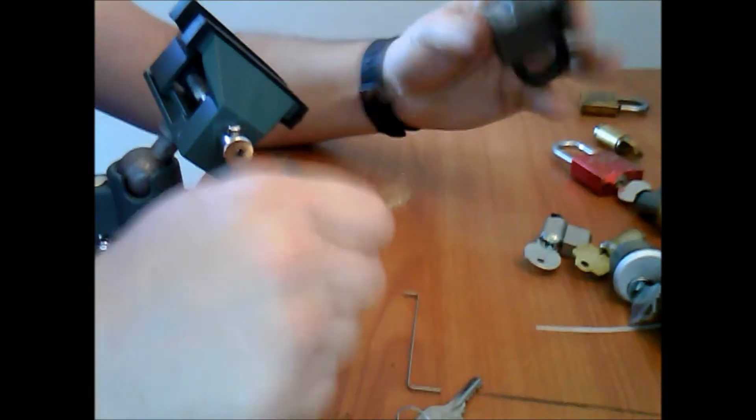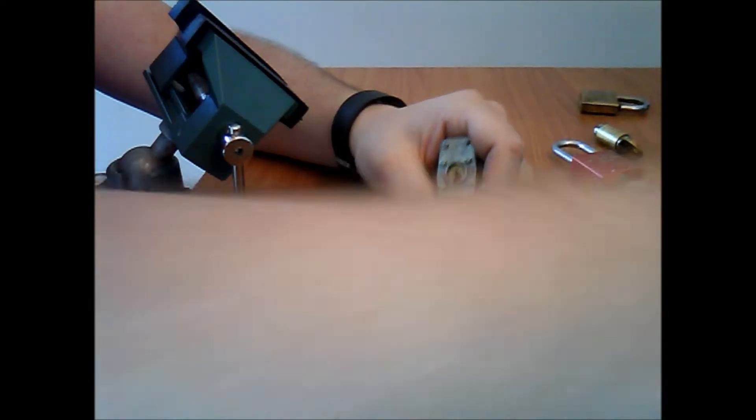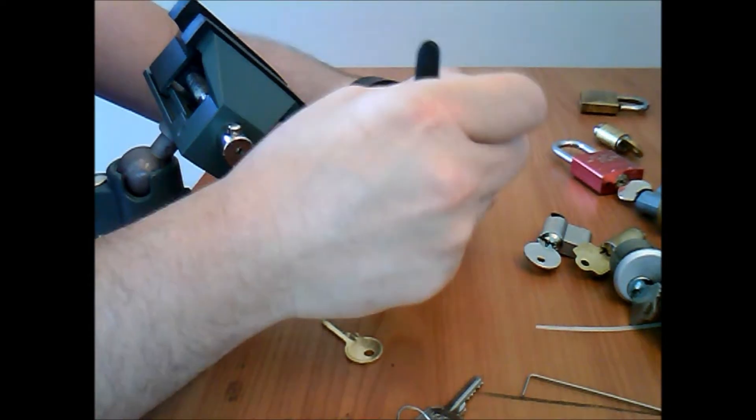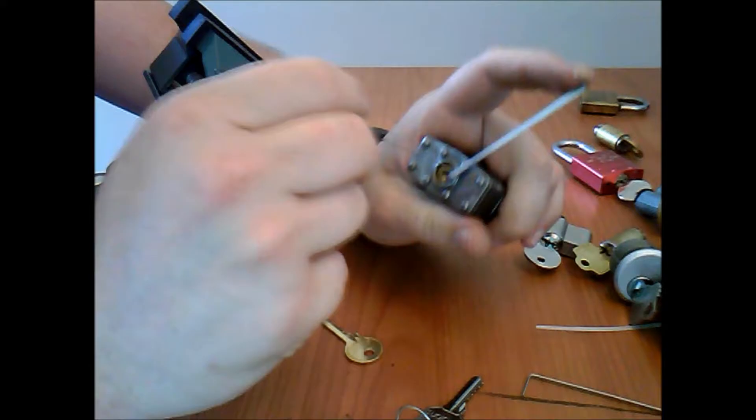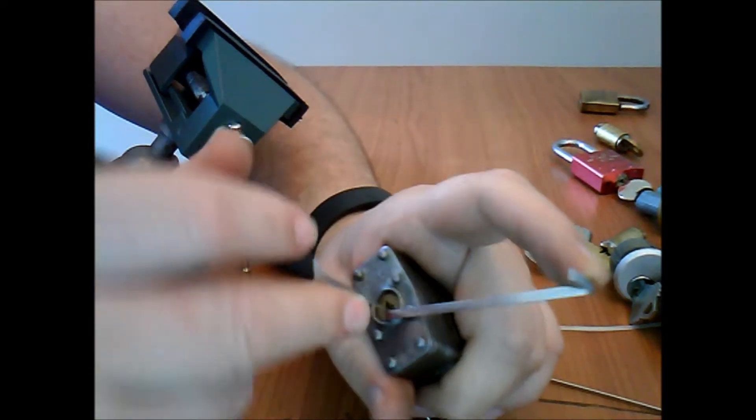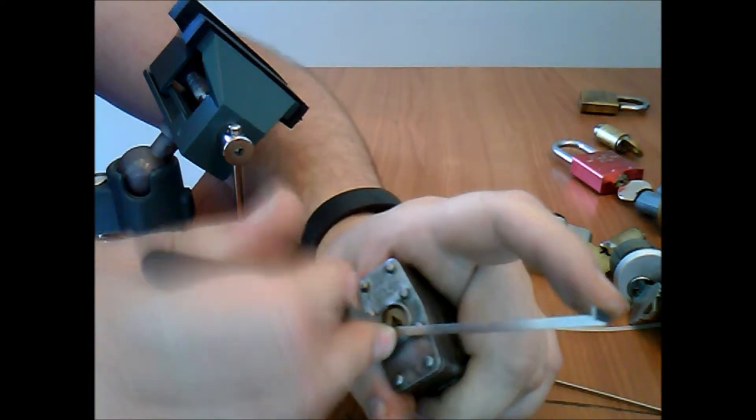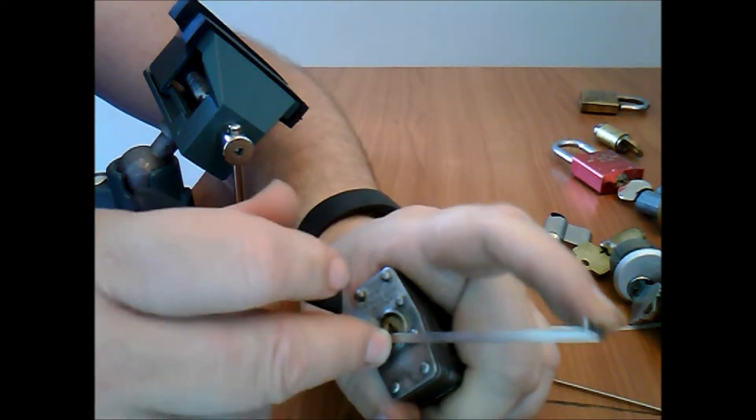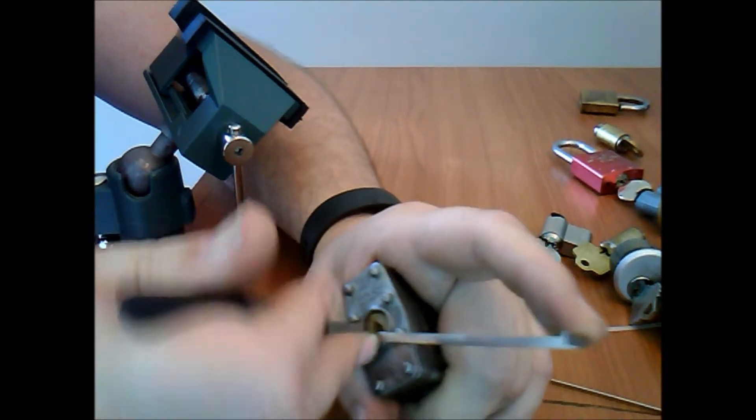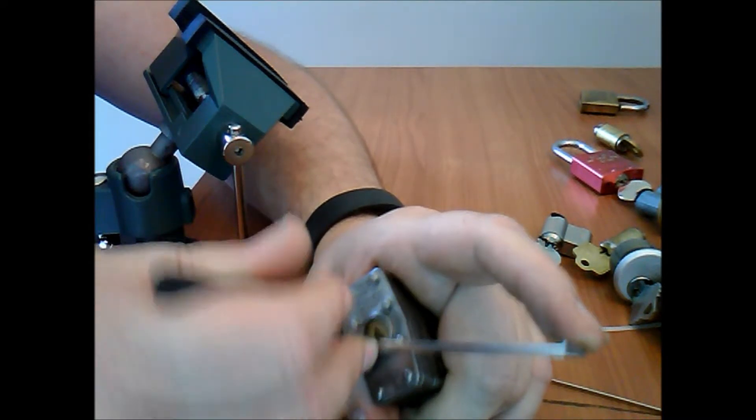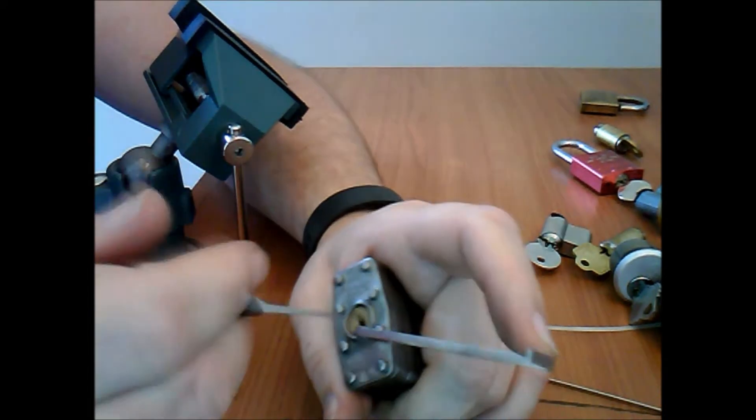And I know the tolerances in these locks aren't that great, so probably no real reason to single pin pick this one right now. Since that one kind of went easy, let's go with this Master lock. Change tension here, get a fatter tension wrench, and let's just slowly rock them in there, just gently pushing up on them as we go back.